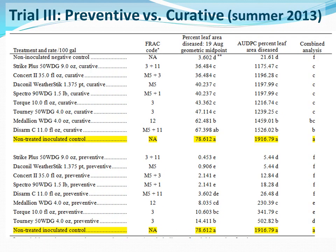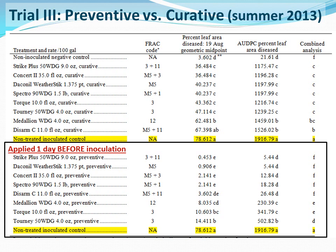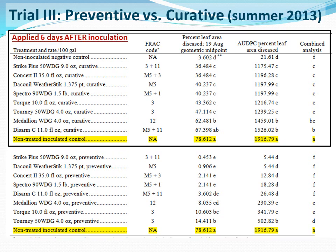Time to move on to our final fungicide trial that we just finished conducting. We wanted to take the most effective chemistries identified in our prior two trials and compare them as preventive versus curative applications. We had very high disease pressure at this time, achieving up to 78% leaf area diseased. We evaluated eight chemistries as preventive treatments, applying them one day before exposing the plants to the fungus. For our curative applications, we took those same chemistries and made applications six days after inoculation, analogous to a grower applying fungicide after actually seeing disease symptoms.